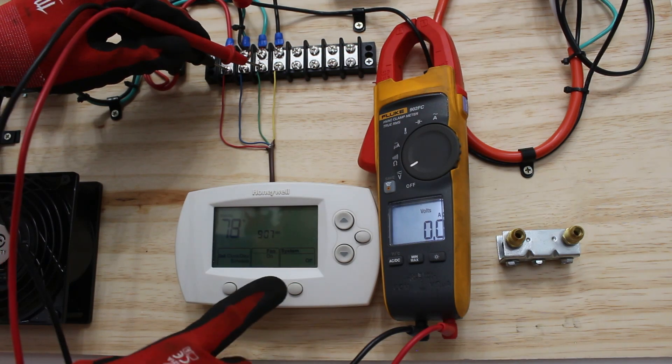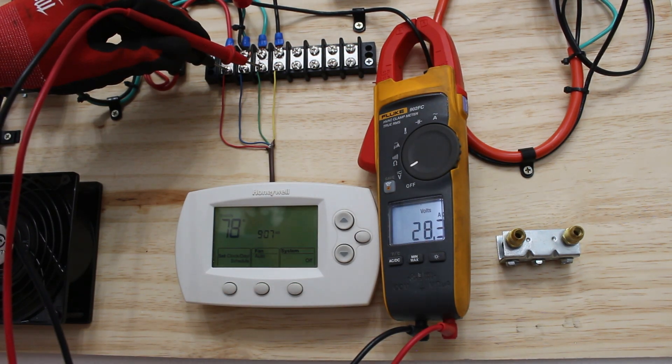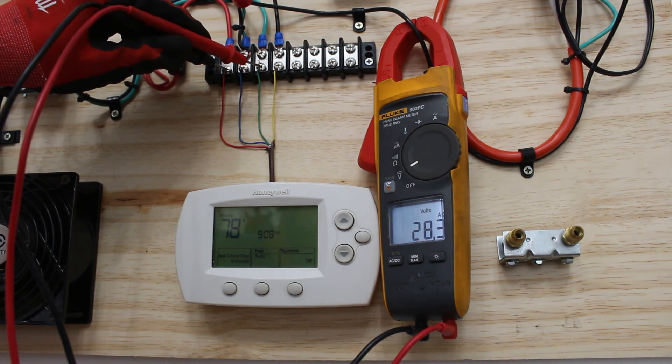That is a good sign. We're going to put the fan on auto again so it turns off and you can see we have 28 volts again. The circuit is open.